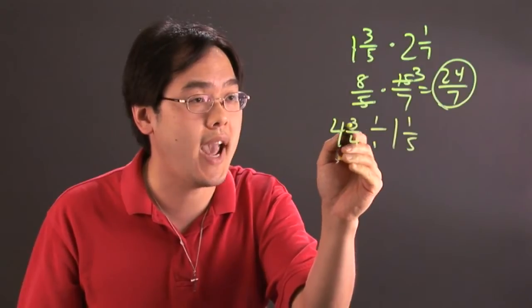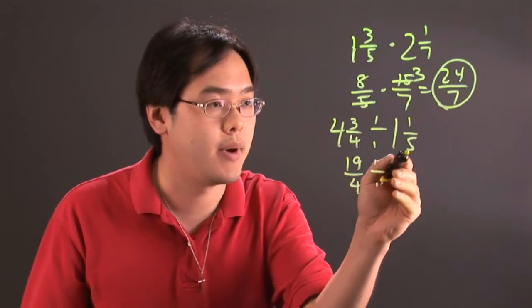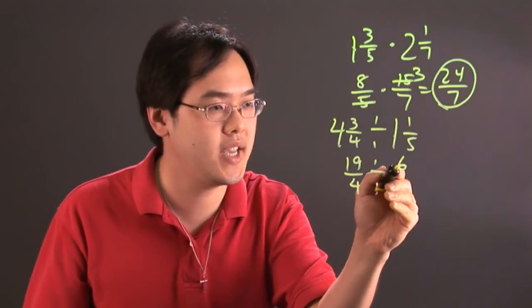Four times four is sixteen, add the three is nineteen, nineteen over four, divided by five times one is five, add the one is going to be six.